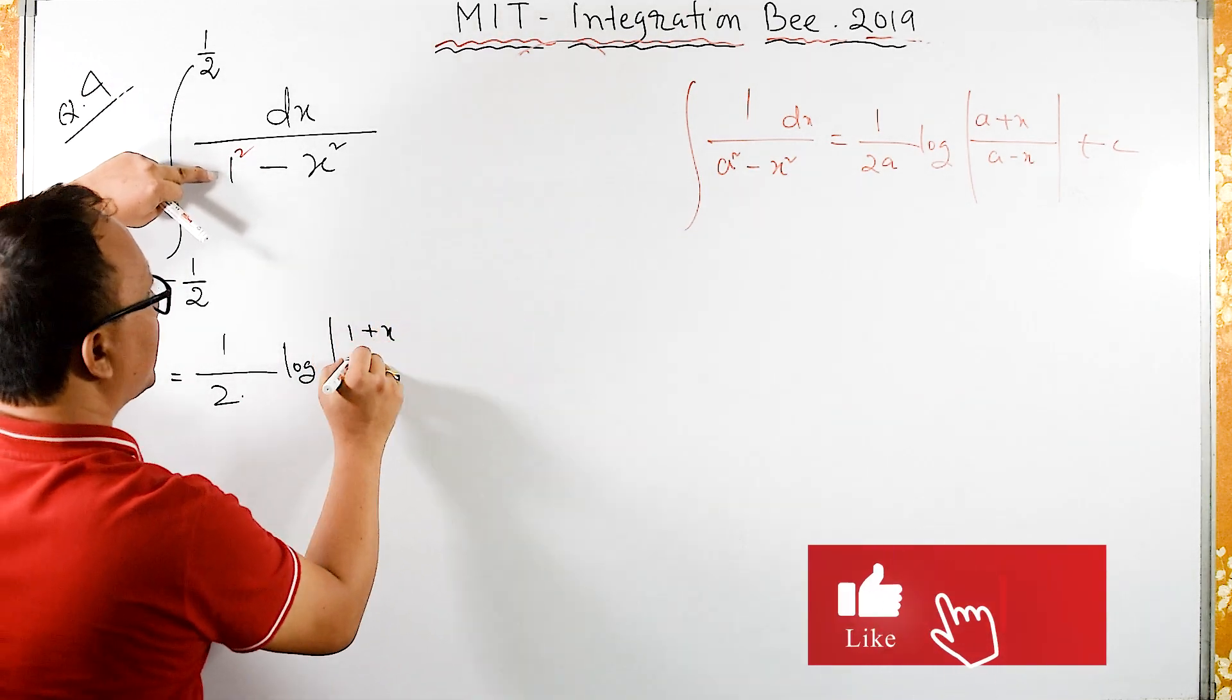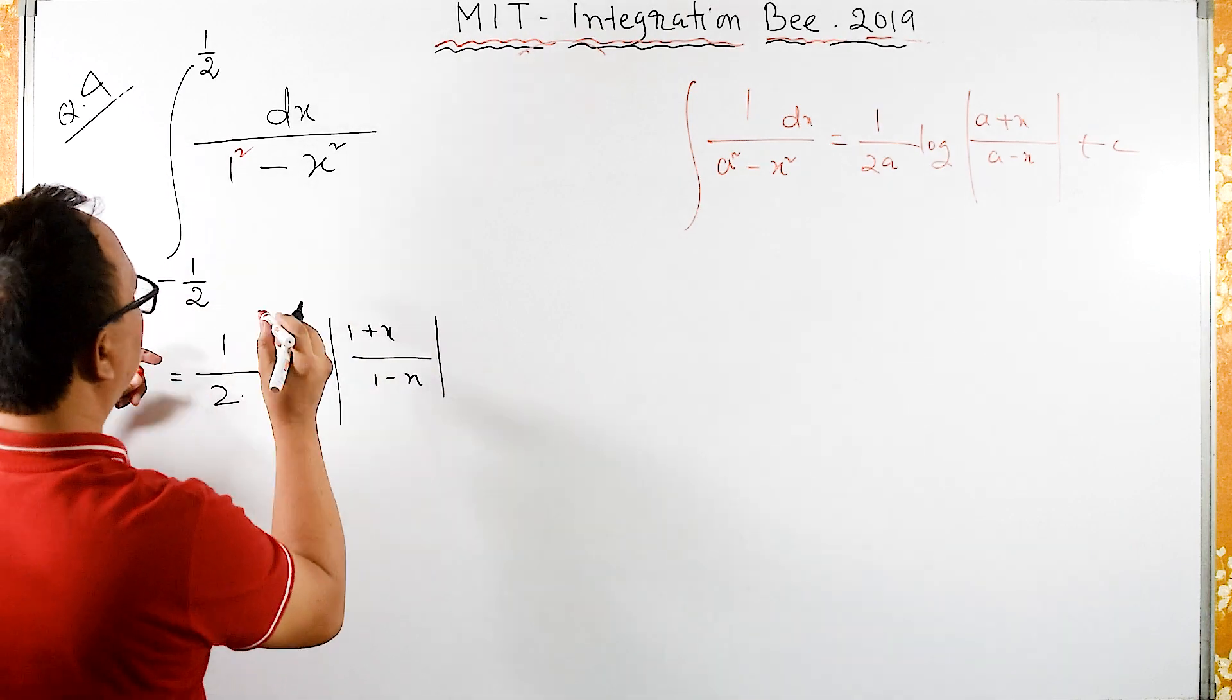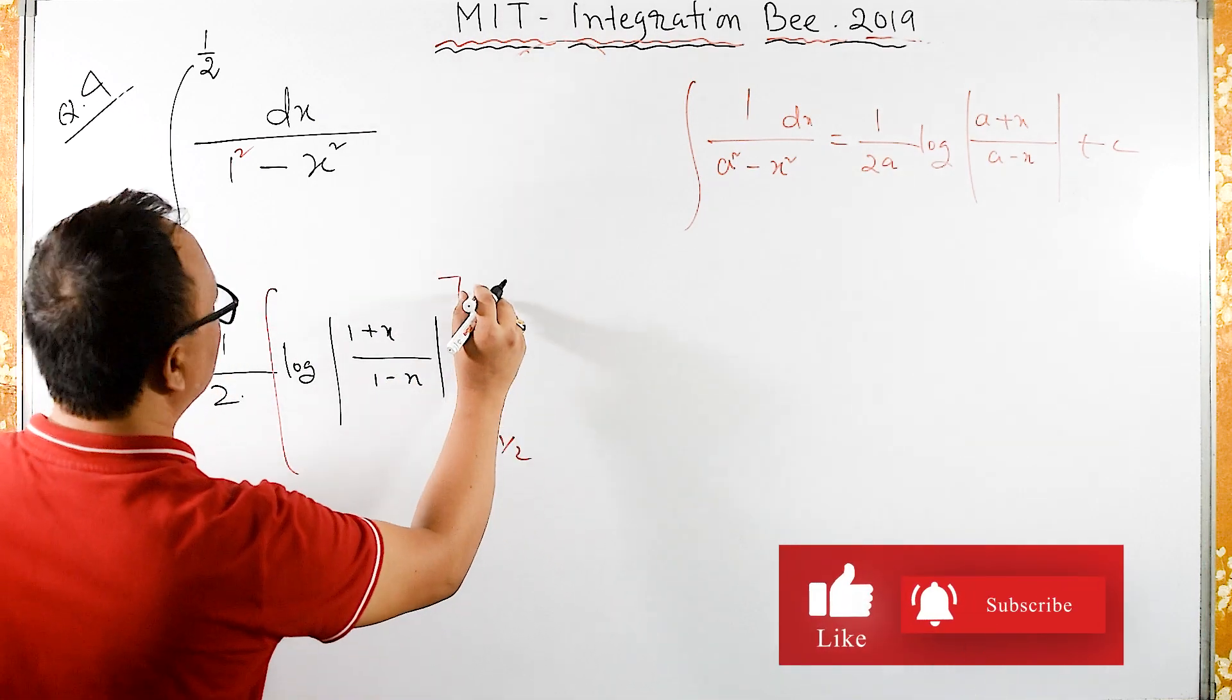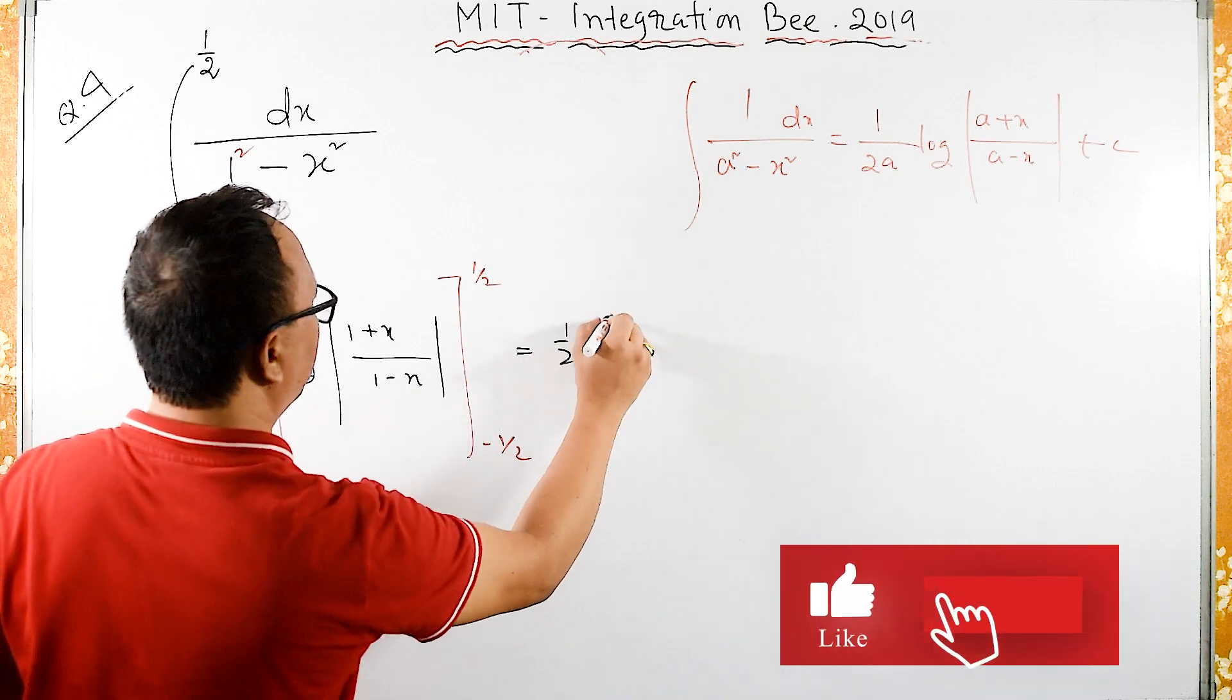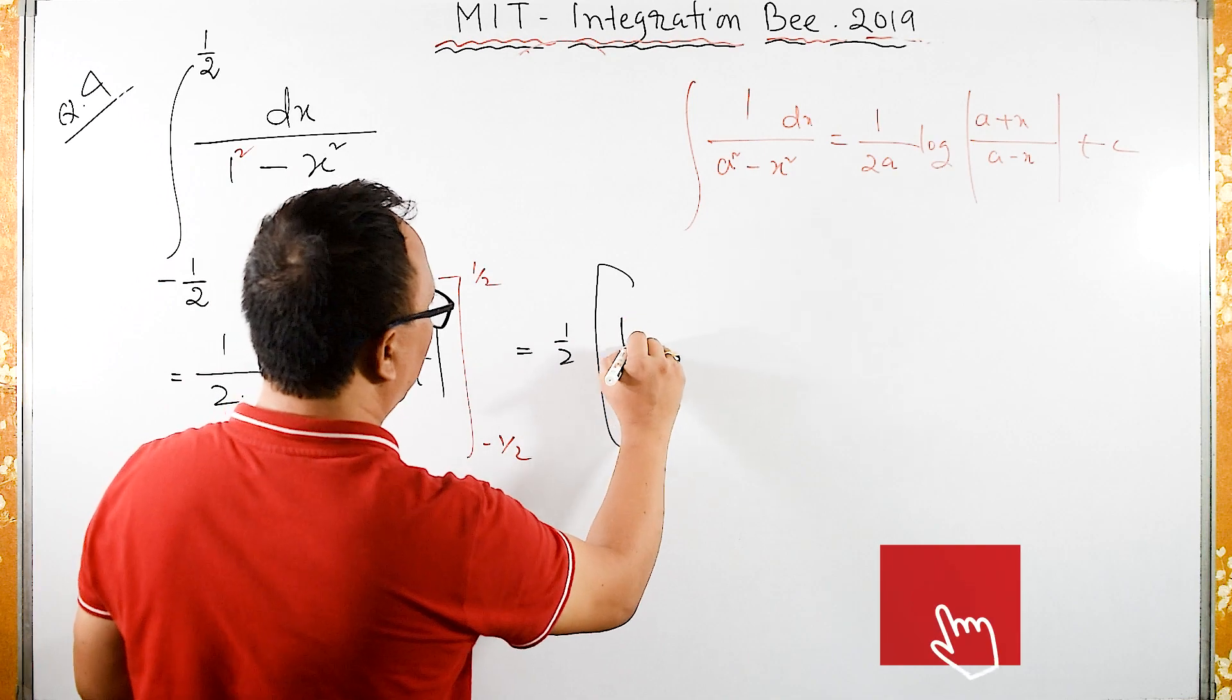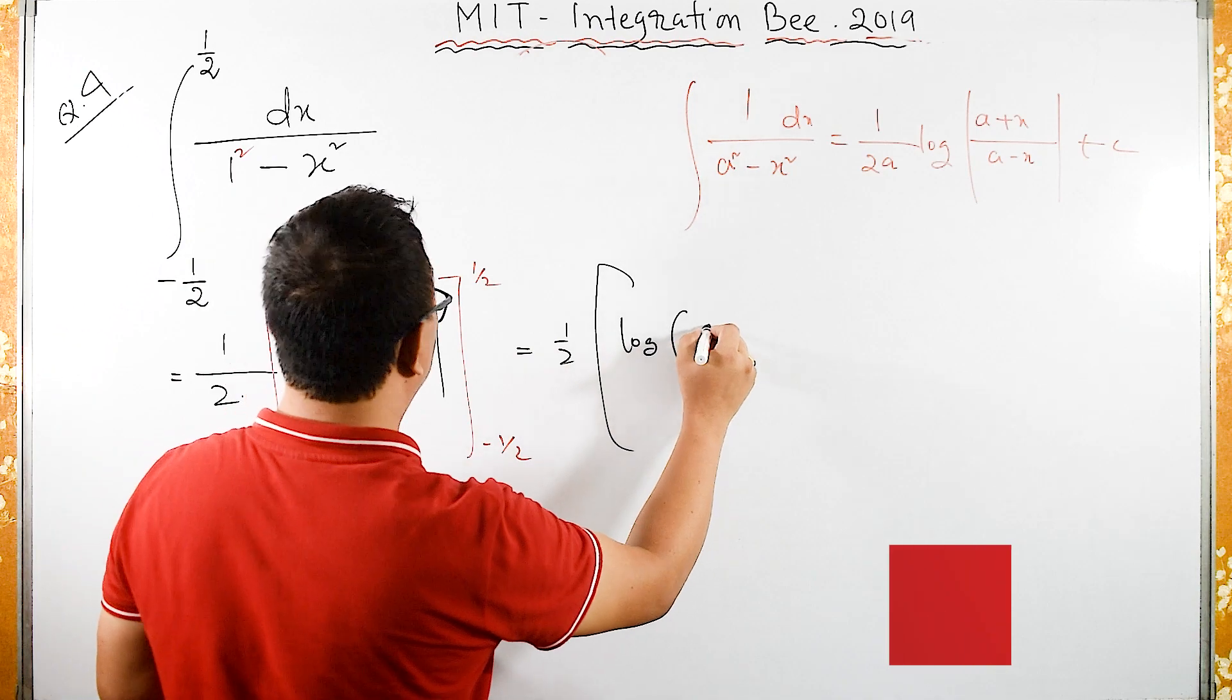plus x upon 1 minus x and the integration limit is from minus half to half. We have half, substitute upper limit minus lower limit. Here we have log of here half plus 1 is 3 by 2,